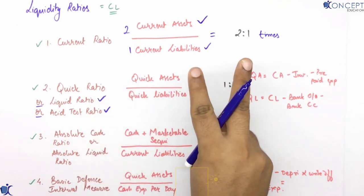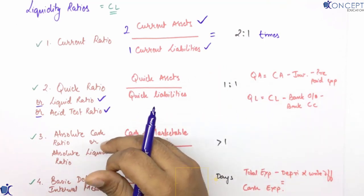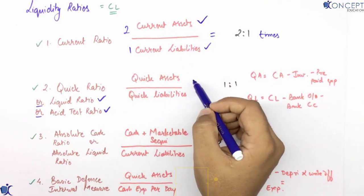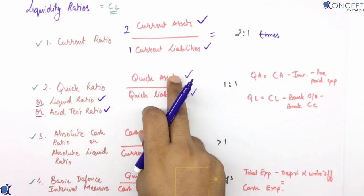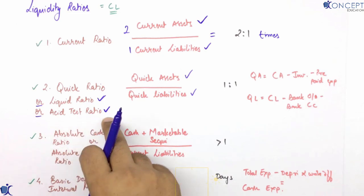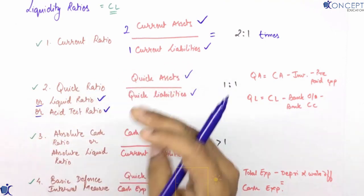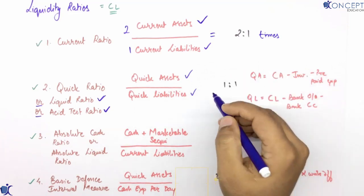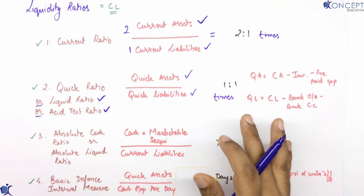Quick ratio ki formula hai quick assets divided by quick liabilities. Agar liquid ratio pucho toh liquid assets by liquid liabilities likhenge; agar acid test ratio pucho toh acid test assets by acid liabilities likhenge — baat ek hi hai. Iska ideal answer 1 is to 1 hota hai, aur answer times mein aata hai.